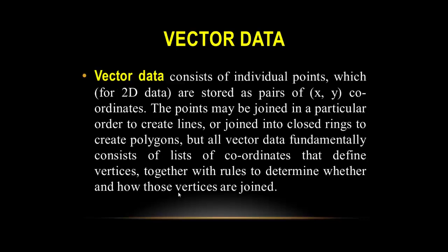Vector data consists of individual points. For 2D data, these are stored as pairs of XY coordinates. For 3D data, X, Y, and Z coordinates are required. Points may be joined in a particular order to create lines, or joined into closed rings to create polygons. All vector data fundamentally consists of lists of coordinates that define vertices, along with rules to determine whether and how those vertices are joined.